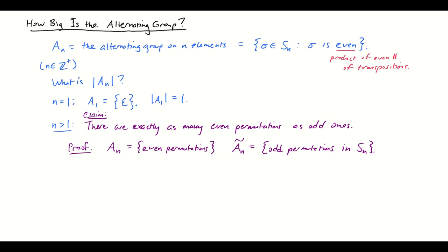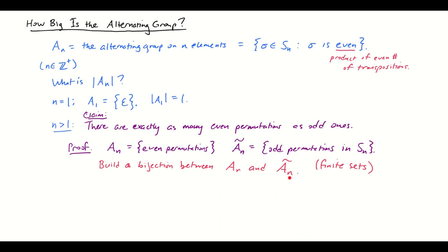We're going to prove that A sub n and A sub n tilde are the same size of set, and the way we're going to do it is by building a bijection between A sub n and A sub n tilde. Why? Well, if we have a bijection between two finite sets, those sets have to have the same size — every element here corresponds to exactly one element over there, because the function is one-to-one and onto. So having a bijection proves these two sets are the same size.